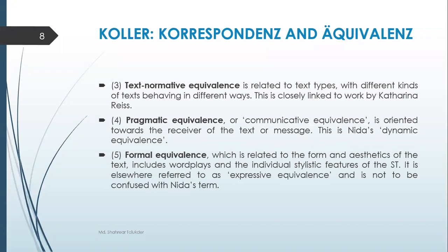Text-normative equivalence — normative means norms are set and you must follow them, and it is based on text type. It relates to what kind of text you are translating: is it a novel, a poem, an essay, a pamphlet, a business document, a recipe, or a manual? On the basis of the text type, you will translate accordingly. I cannot translate a play the same way as a novel because they are two different genres and must be treated differently while translating, just as we treat them differently while reading.